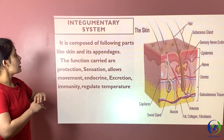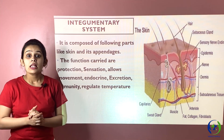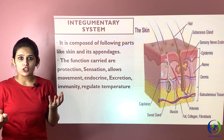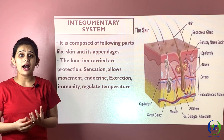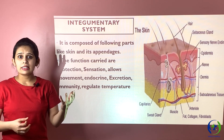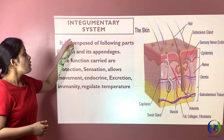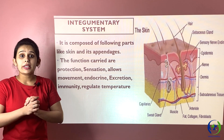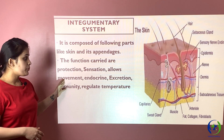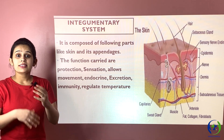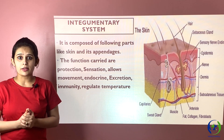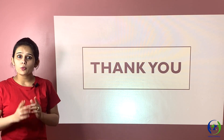The last system is the integumentary system, which consists of skin and its appendages — hair, nails, hair follicles, sebaceous glands, sweat glands, and more. It forms a system because it plays a very important role in protection, sensation, allowing movement, endocrine functions, excretion, and many more functions.